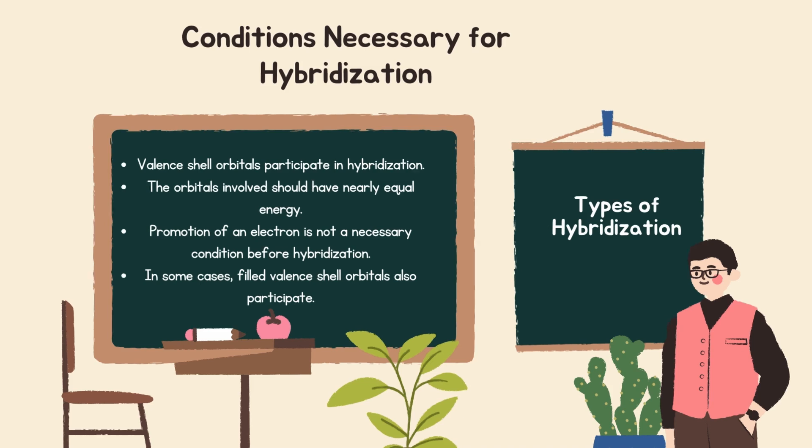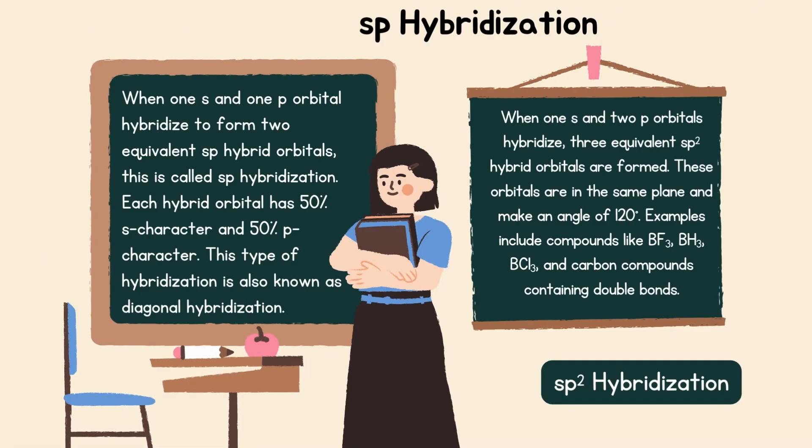Types of hybridization. First is sp hybridization. When one s and one p orbital hybridize to form two equivalent sp hybrid orbitals, this is called sp hybridization. Each hybrid orbital has 50% s character and 50% p character. This type of hybridization is also known as diagonal hybridization.